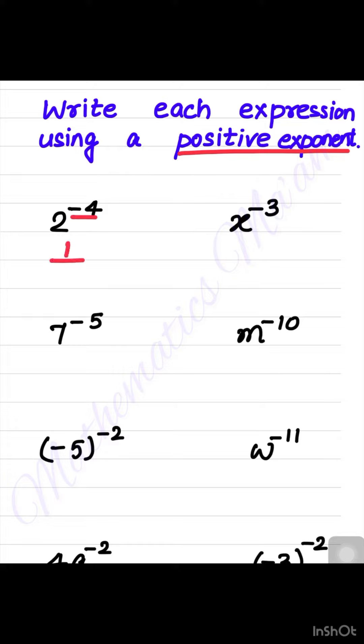If we have 2 to the power minus 4, we have to make minus 4 positive 4. So we can write it as 1 by 2 to the power 4. It has become positive.